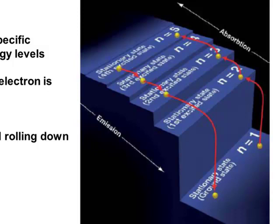If an electron needs to go from a lower energy level to a higher energy level, we have to put energy in — that's called an absorption process. In other words, if I want the ball to go from the bottom step to the top step, I have to lift the ball up and carry it up those steps; I have to put energy into the ball. As an electron goes from a higher energy level to a lower energy level, it's going to lose energy and stop at a very specific step.